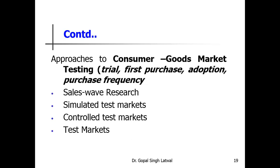Under control test market, the company specifies a number of stores and geographical locations to test. A research firm delivers the product to participating stores and controls shelf positioning, pricing, number of facings, displays, and point-of-purchase promotion. Electronic scanners measure sales at checkout, and the company can evaluate the impact of local advertising and promotion and interview a sample of customers to get their impressions. The company does not have to use its own sales force, give trade allowances, or buy distribution.